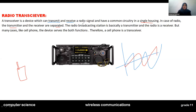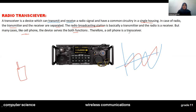The transmitter is like a radio broadcasting station, where signals are broadcast from the transmitter. But in many cases, like smartphones, the device serves both functions — as sender and receiver — and we call it a transceiver.